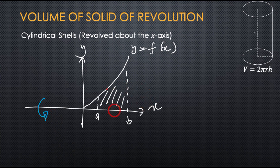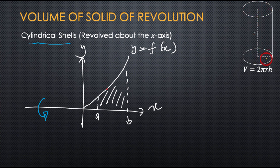You revolve this region using the cylindrical shell method. First, you need to identify the circle, and then you identify the height. After you identify the circle, you will get the radius, because the volume of a cylinder is 2π times radius times height.